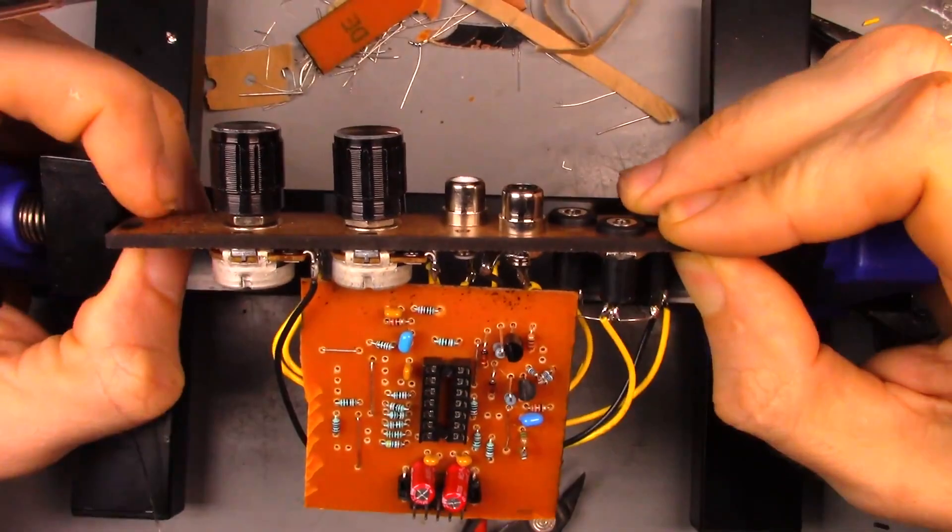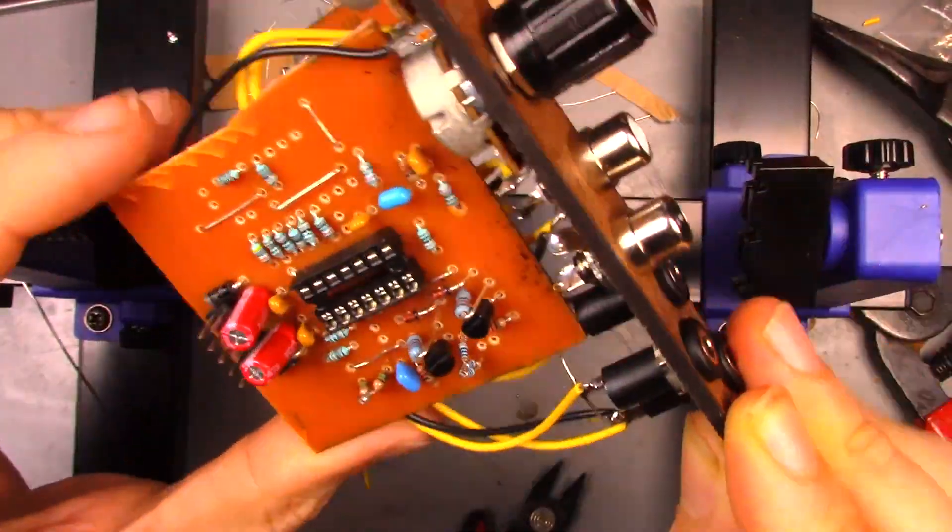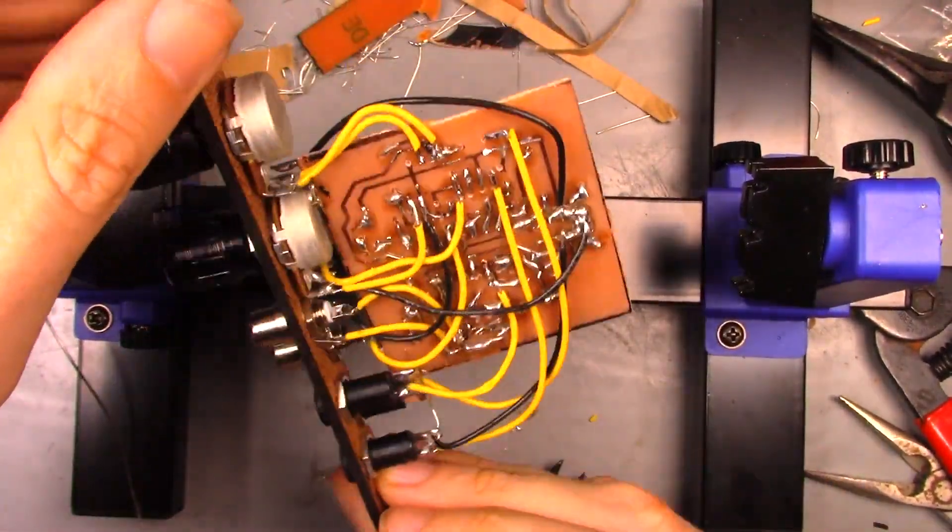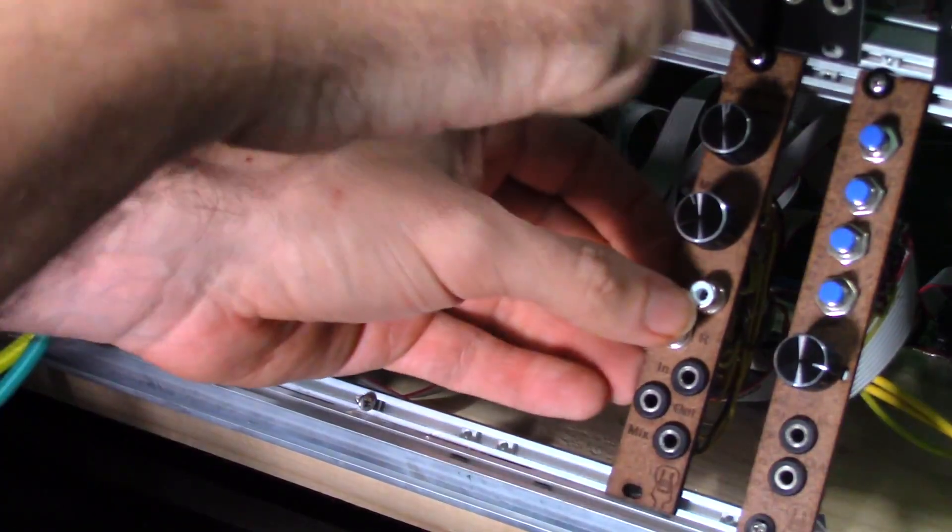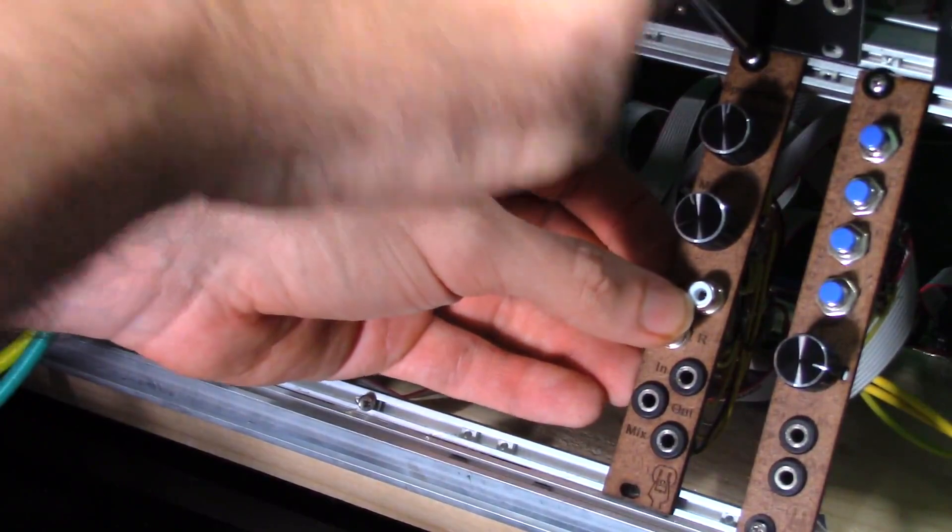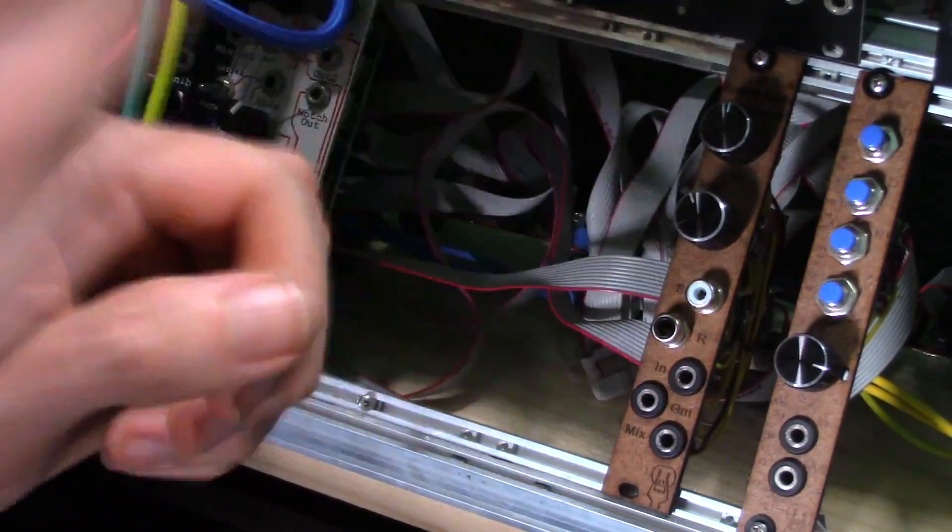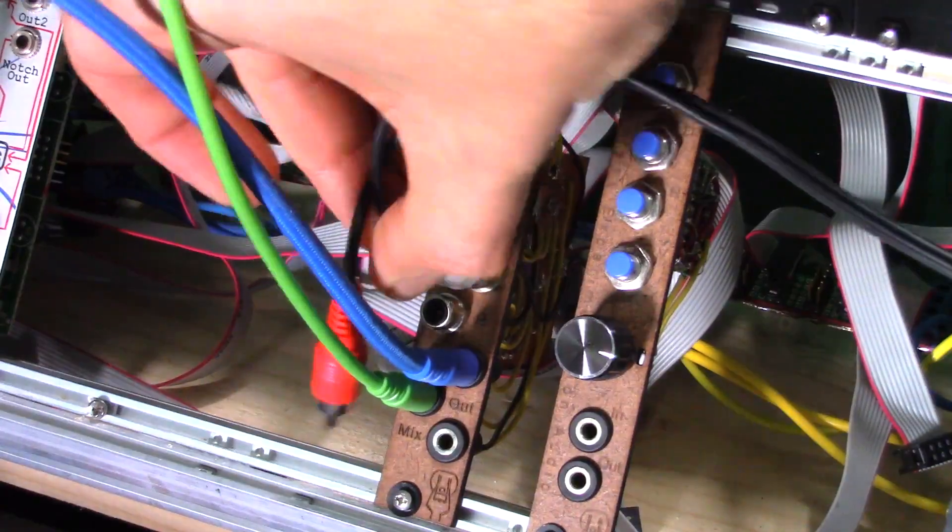And here we have the finished module. Once we make sure the magic green smoke is not going to come out, the module can be mounted in the rack.